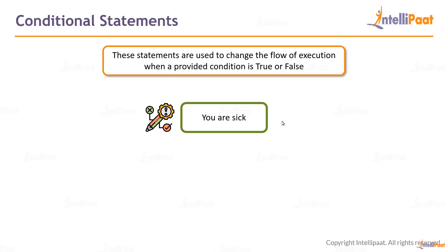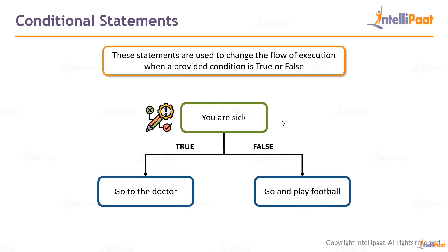These statements are used to change the flow of execution when a provided condition is true or false. Let's say you are performing something and when that particular operation is true, you have to do a set of commands; if it is false, you execute another set of commands. Conditional statements decide whether it is true or false. For example: you are sick — if that is true, go to the doctor; if false, go play football.